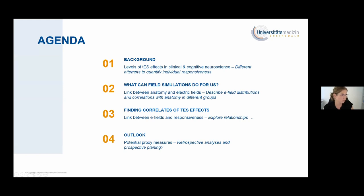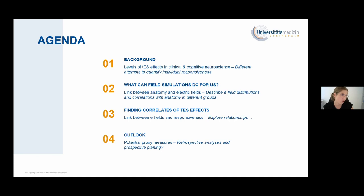First, I will present some examples of levels of test effects we usually assess in clinical and cognitive neuroscience to give a brief introduction into the different attempts to quantify individual responsiveness. Second, this responsiveness can be correlated to electric field quantifications we obtain from computational modeling. I will present a study where we tried to disentangle the contributors from head and brain anatomy. Third, I will talk about our observations of links between E-fields and empirical test effects, and finally I present an idea how the magnitude of electric fields can be estimated if individual MR images are not present, as can be the case in clinical contexts.